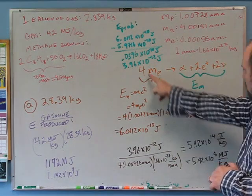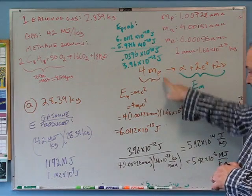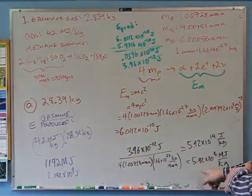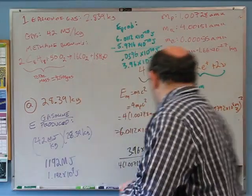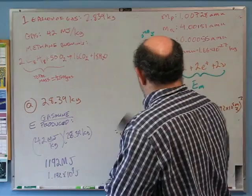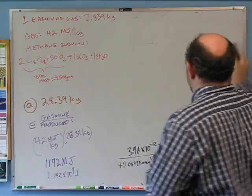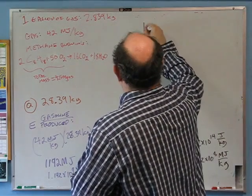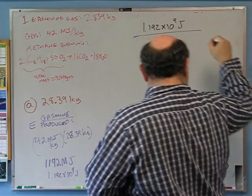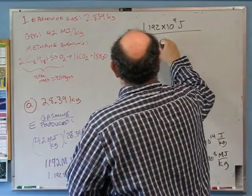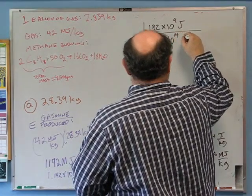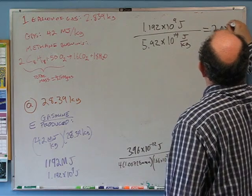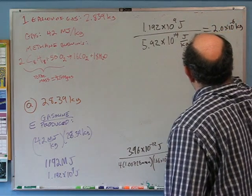So the energy produced per reaction divided by the mass of fuel gives MJ/kg. Now that I know this and how many joules I need (1.192×10⁹ J), I can find how many kilograms of hydrogen I need: 1.192×10⁹ ÷ 5.92×10¹⁴ J/kg = 2.0×10⁻⁶ kg, or 2 milligrams.